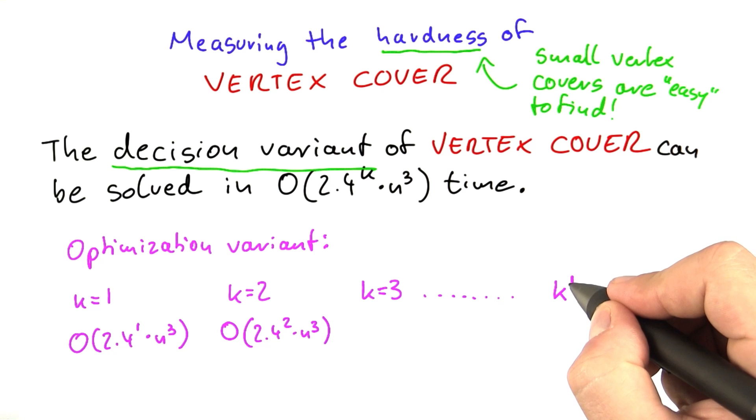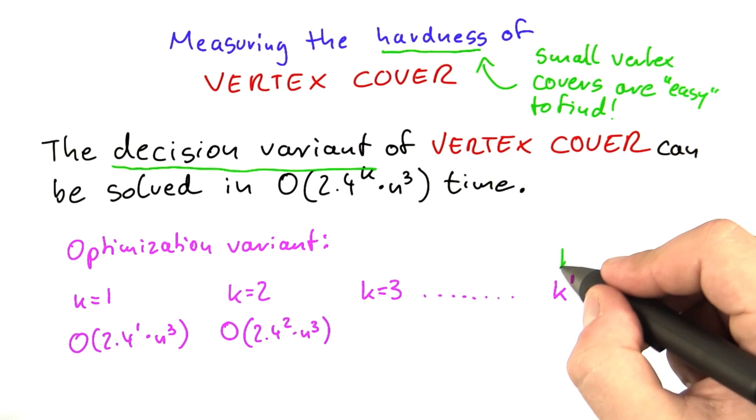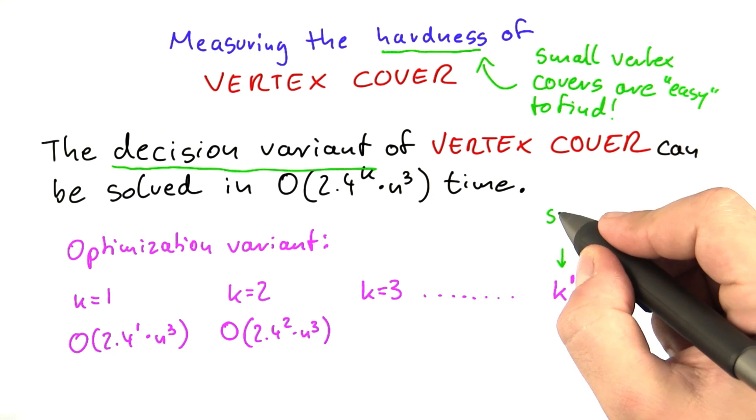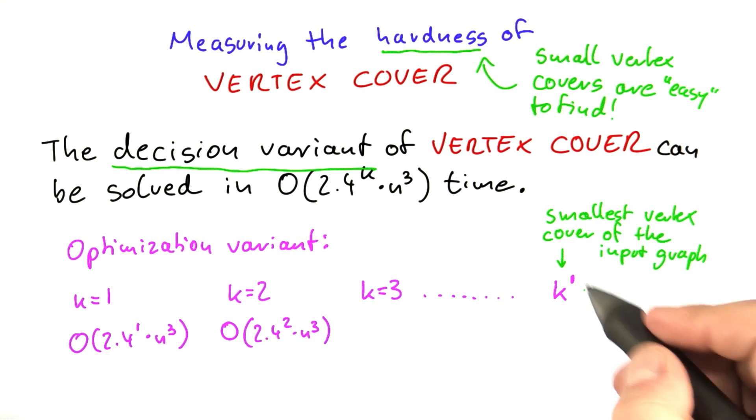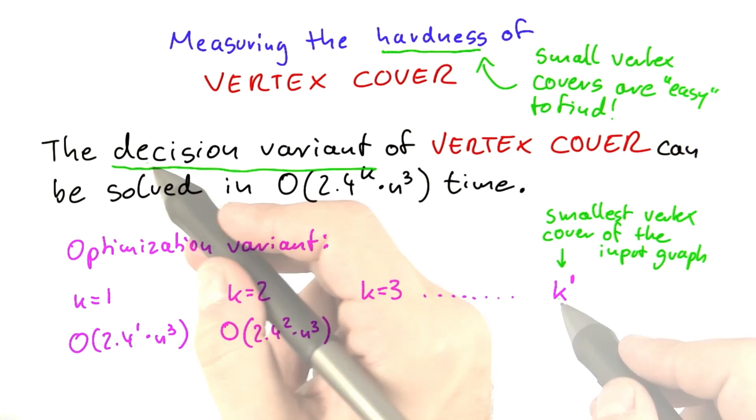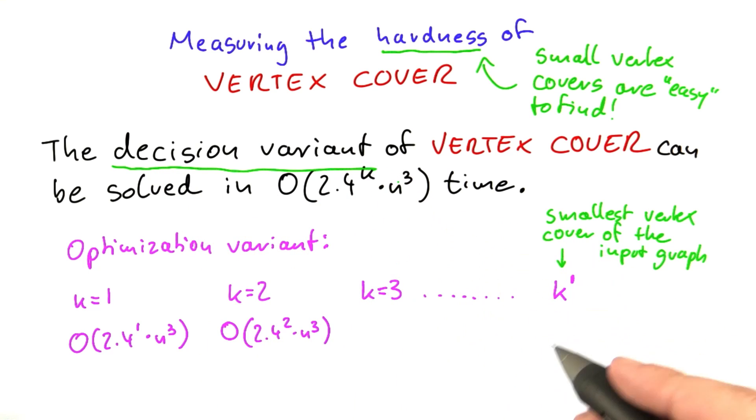Until we hit some value k prime, which is the size of the smallest vertex cover of the input graph. Of course, we don't know what that size will be in advance. But once we have increased k enough, solving the decision variant will give us the answer yes. Now how much running time is this in total?